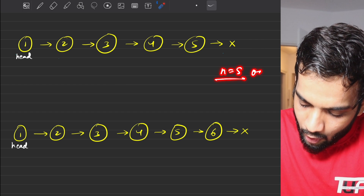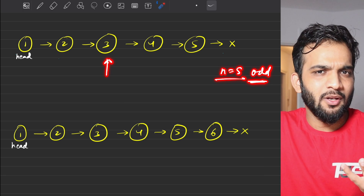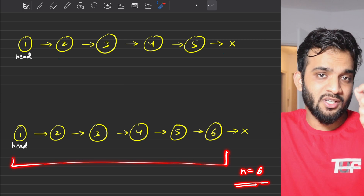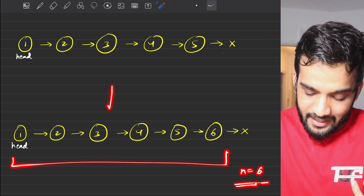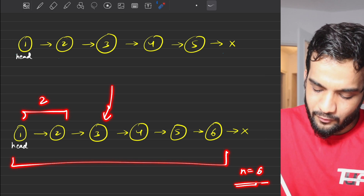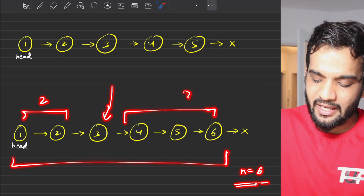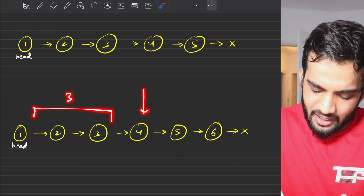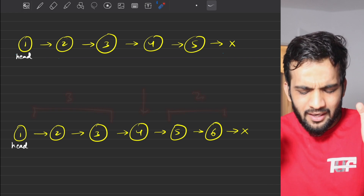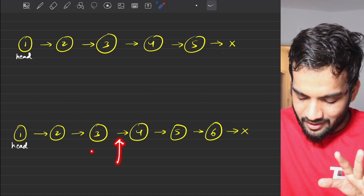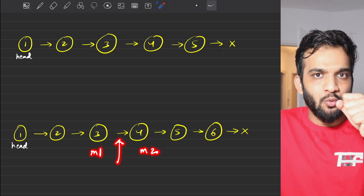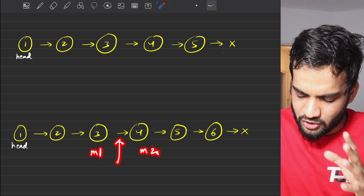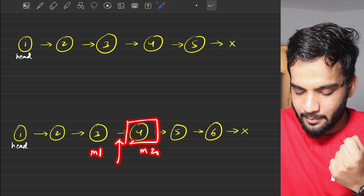n=5 was odd, so getting the middle was simple. What if it has an even number of nodes? With six nodes, I cannot say this is the middle because on the left we have two elements and on the right we have three — it's not exactly the middle. The middle is somewhere between m1 and m2. In such cases, whenever there are even number of nodes, you'll be returning the second middle — you'll return node four.